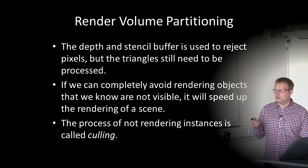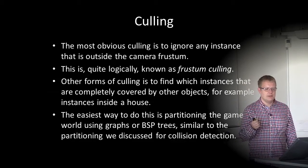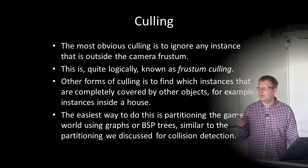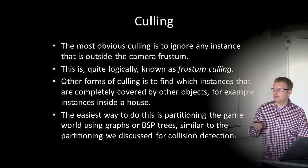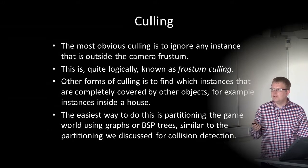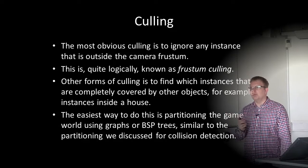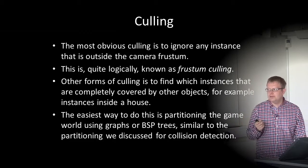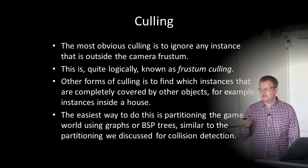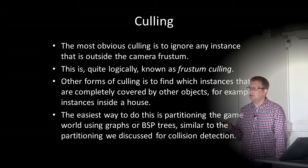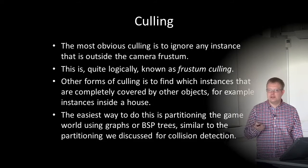The process of not rendering instances is called culling. The most obvious culling is to ignore any instance outside the camera frustum, known as frustum culling. Other forms of culling find instances that are completely covered by other objects — for example, characters inside a house when the camera is outside. The easiest way is to partition the game world using graphs or BSP trees, similar to the partitioning used for collision detection. Partitioning the game world is very important for different steps in the game loop: collision detection, rendering, etc.